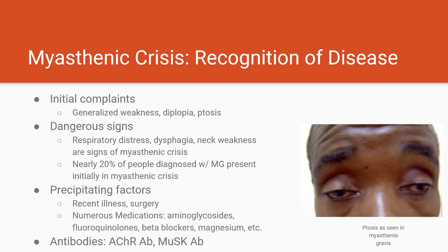The most common dangerous neuromuscular disease you're likely to see inpatient is myasthenia gravis and its associated myasthenic crisis. Myasthenia gravis is an autoimmune disease where the body develops antibodies against acetylcholine receptors at the neuromuscular junction, leading to fatigable weakness that can affect proximal and bulbar muscles. Patients initially complain of general weakness, diplopia, and ptosis, but the symptoms to really pay attention to are bulbar symptoms — specifically respiratory distress, dysphagia, and neck weakness — which are signs of myasthenic crisis. Crisis is more severe than exacerbation: exacerbation means worsening weakness, while crisis refers to imminent respiratory failure. Terrifyingly, about 20% of people with myasthenia present initially in crisis before they even know they have the disorder.